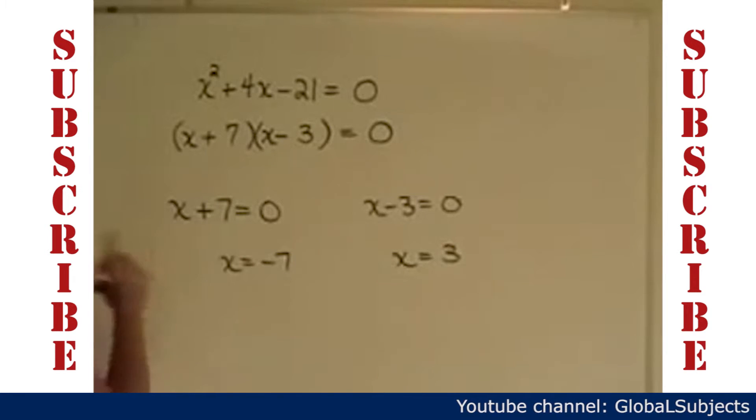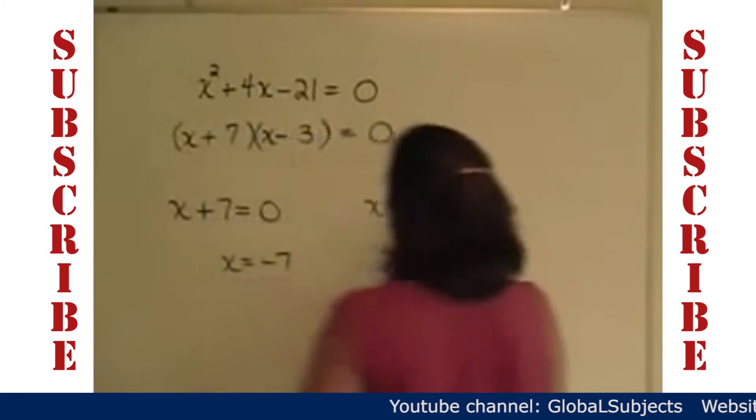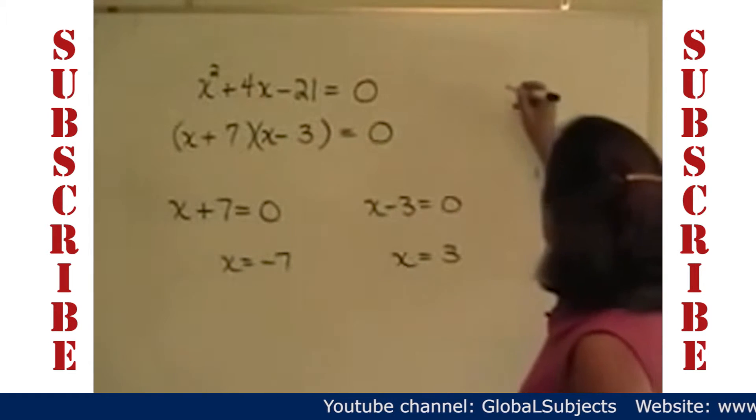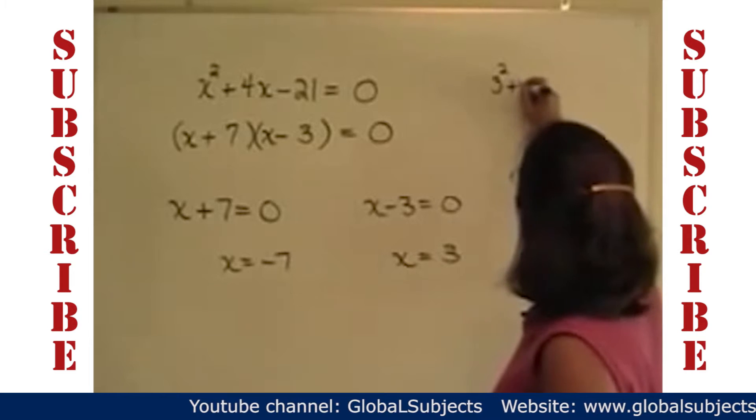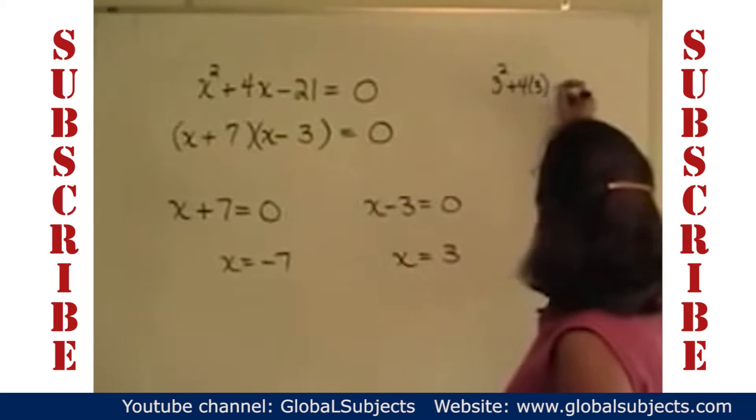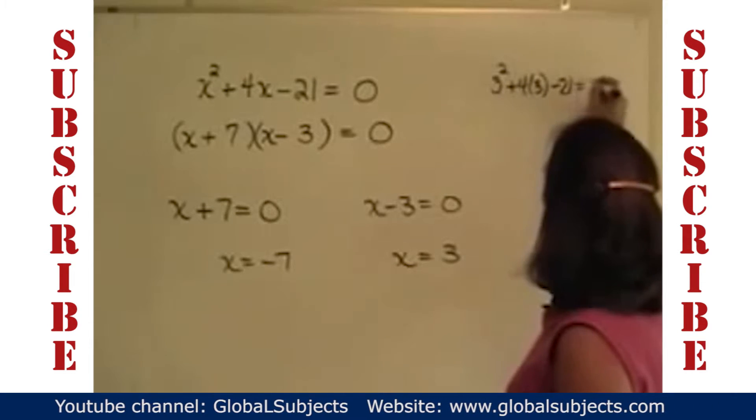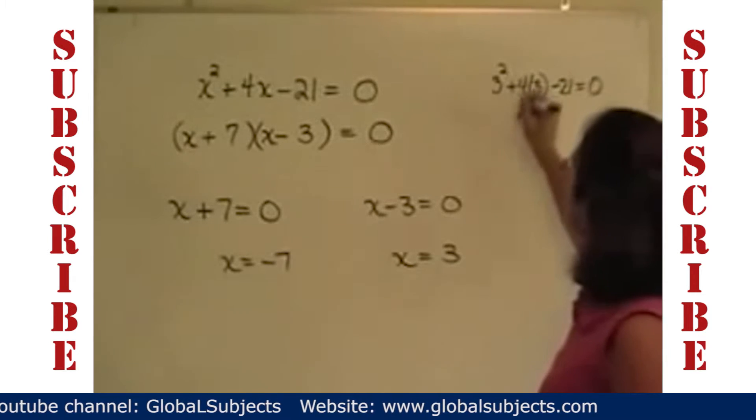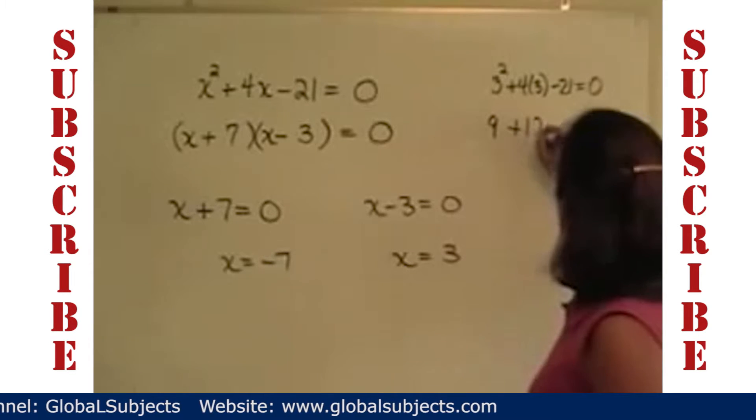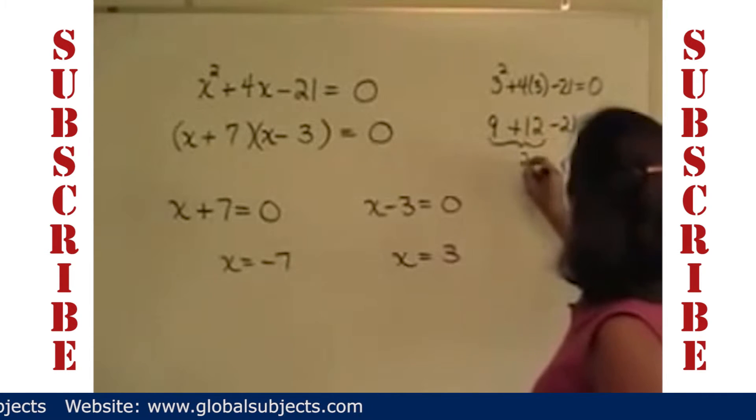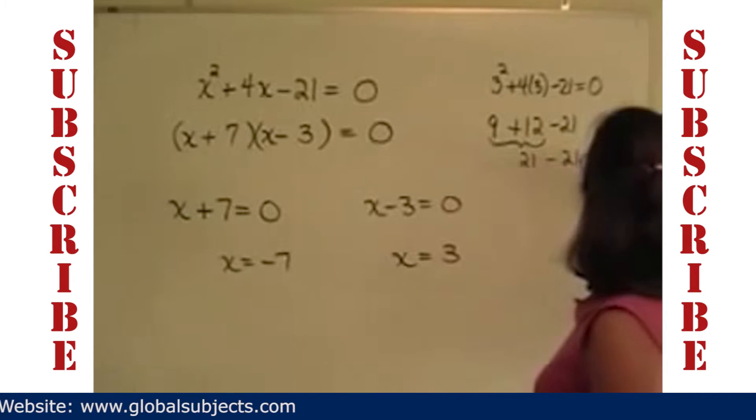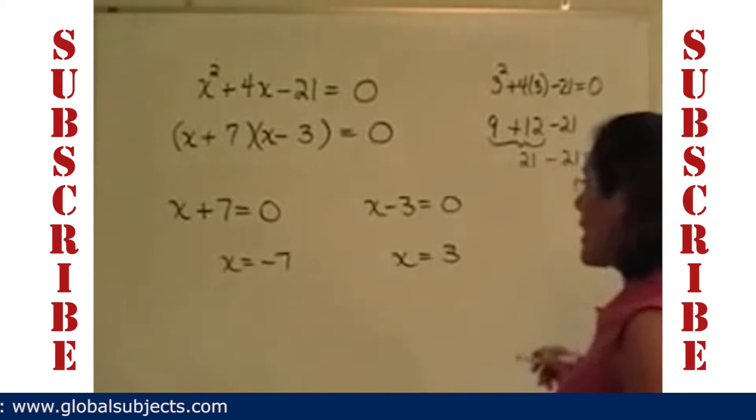If I were to check them, let's put the 3 in for x. I will take 3 and square it, plus 4 times 3, minus 21, and I want to know if that equals 0. 3 squared is 9. 4 times 3 is 12. We're using order of operations. 9 plus 12 is 21. 21 minus 21 does equal 0, and it checks.